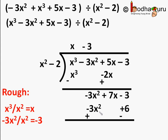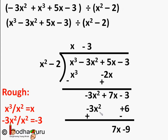Minus 3 minus 6 becomes minus 9, and 7x comes down, so we get 7x minus 9 as the remaining dividend. The degree of 7x minus 9 is 1, whereas the degree of the divisor x squared minus 2 is 2. Since the degree of the remainder is less than the degree of the divisor, we cannot divide further — division stops here.